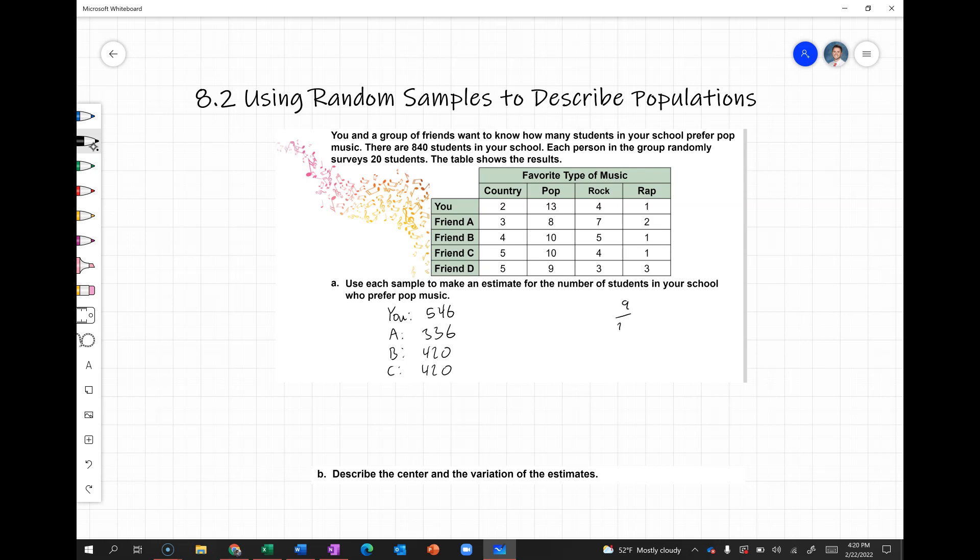So that's 9/20 is equal to n over 840. So we multiply by 42 here, because this is a proportion. We know 20 times 42 is 840, so 9 times 42, we get 378.